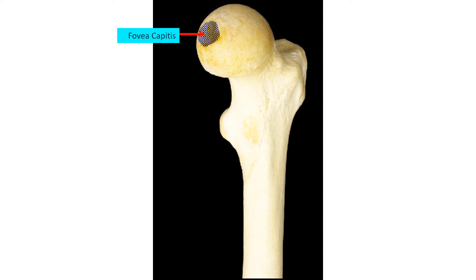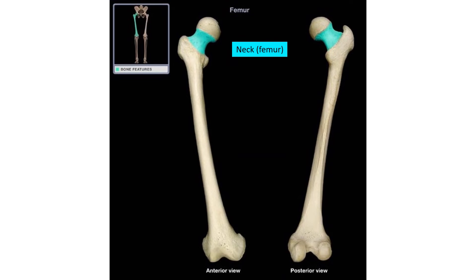The head of the femur has a special feature: a depression that serves as the attachment of a ligament fixing the head to the acetabulum. This depression is called the fovea capitis — 'capitis' means head and 'fovea' means a small rounded depression.